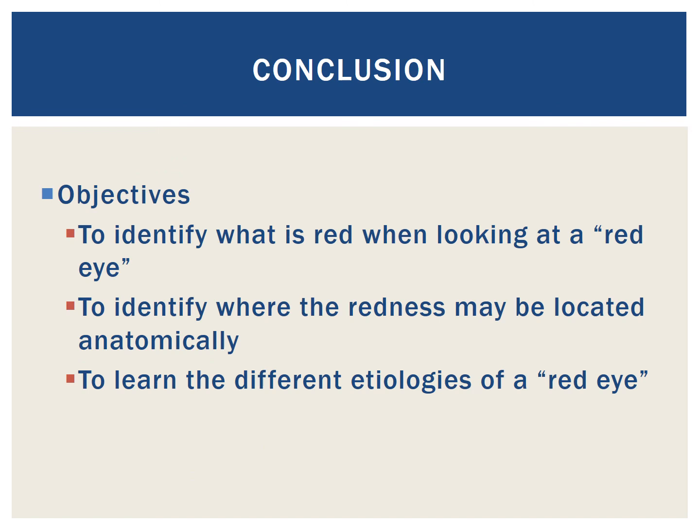In conclusion, we learned that blood causes the redness in red eyes, and that this blood may be located in three different anatomic locations: within prominent conjunctival blood vessels in conjunctival injection; outside of conjunctival blood vessels and between the sclera and conjunctiva in subconjunctival hemorrhage; and pooled within the anterior chamber in hyphemas. We also covered many of the common and salient etiologies of red eye in brief. For a more detailed review of these etiologies, please view the other video lectures located on this site.